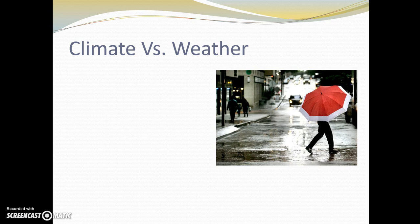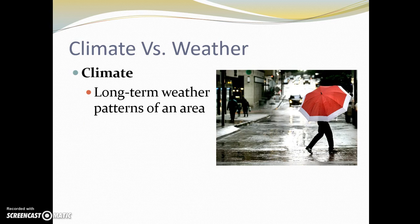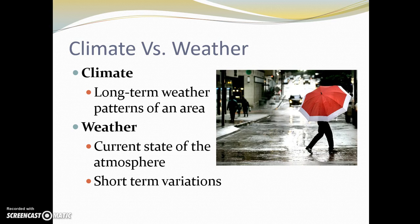First of all, we need to discuss the difference between climate and weather. Climate is long-term weather patterns of an area. Weather is the current state of the atmosphere, short-term variations. For example, in Laredo it might rain from time to time, but we cannot say that our climate is rainy because we know that our climate is usually dry and very hot. It might rain from time to time—that's the weather at that time period—but in the long term, our climate is hot and dry. That's the difference.